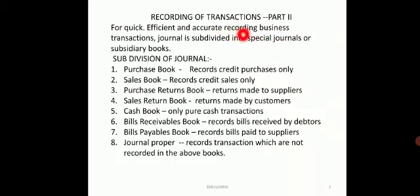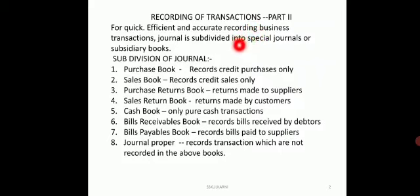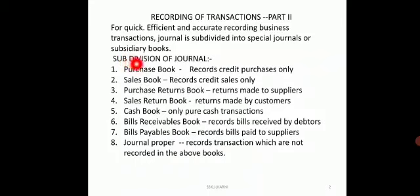Special journals give us easy reference for looking at any transactions. For example, we can know the amount of credit purchases, credit sales, or cash transactions. Similar types of transactions are recorded in one particular book, called a subdivision of journal, special journal, or subsidiary book. We have different subsidiary books.